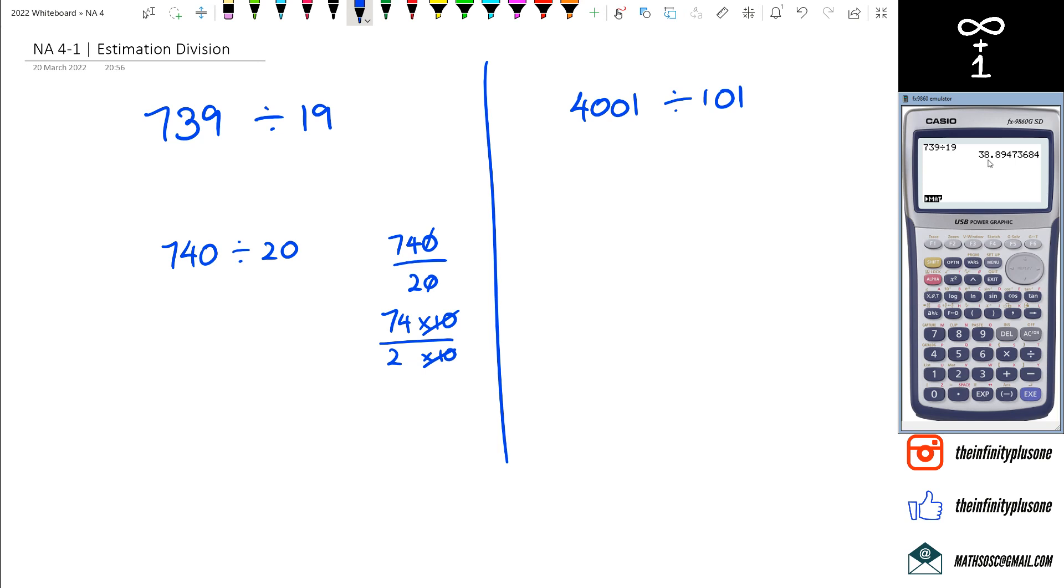So we got 74 divided by 2, that's roughly 37. And if I look at my calculator answer, it's about 38.9. 37 is fairly close. I think that's a good estimation. Let's go to the next one here.